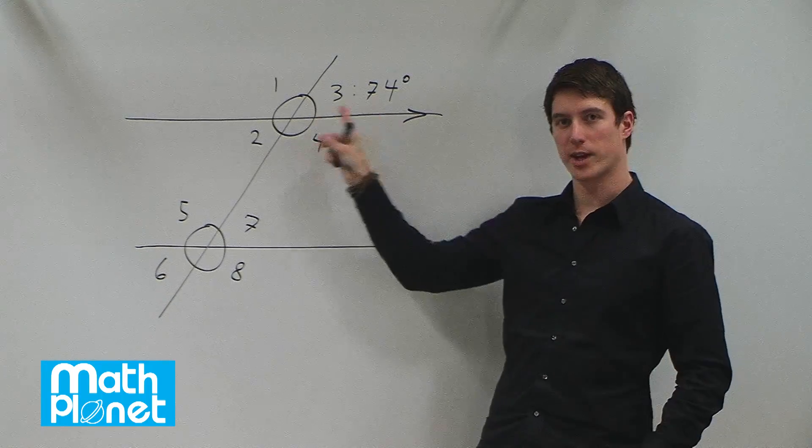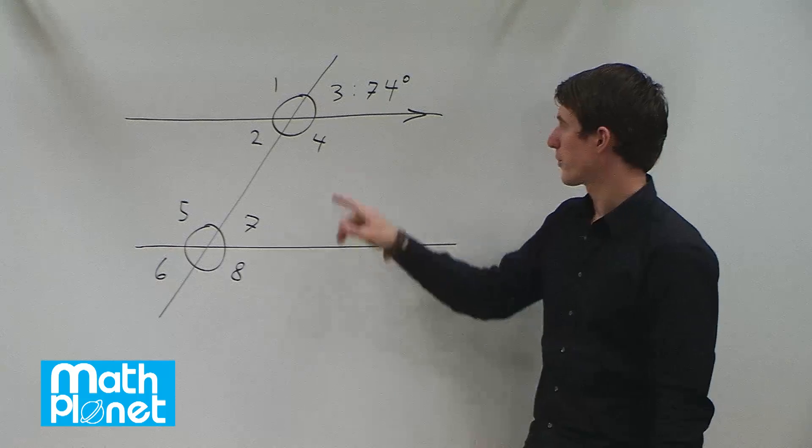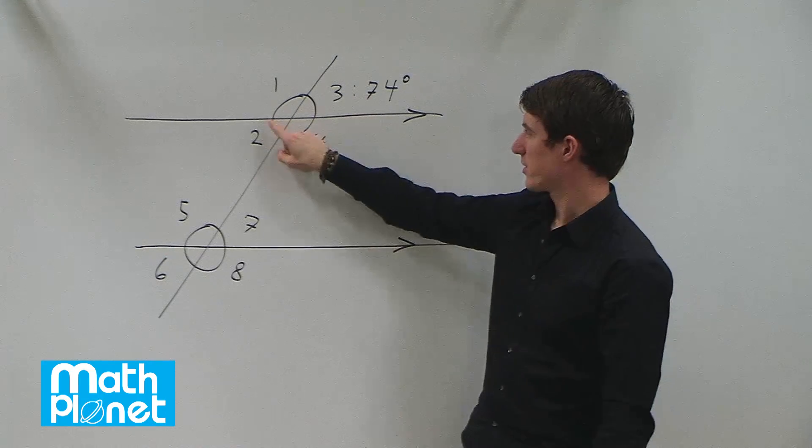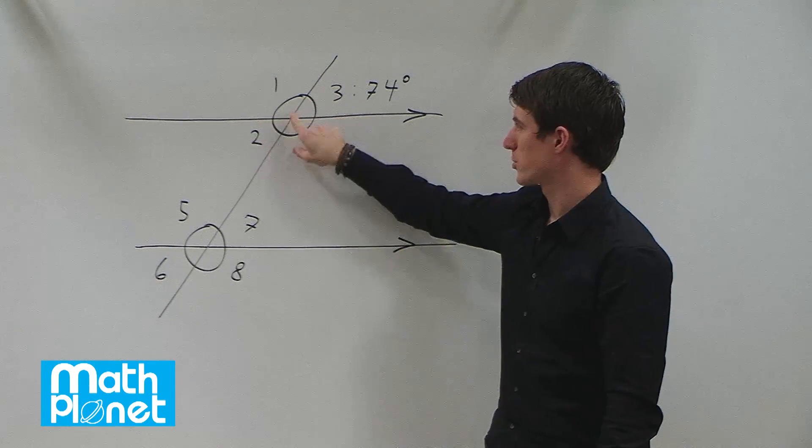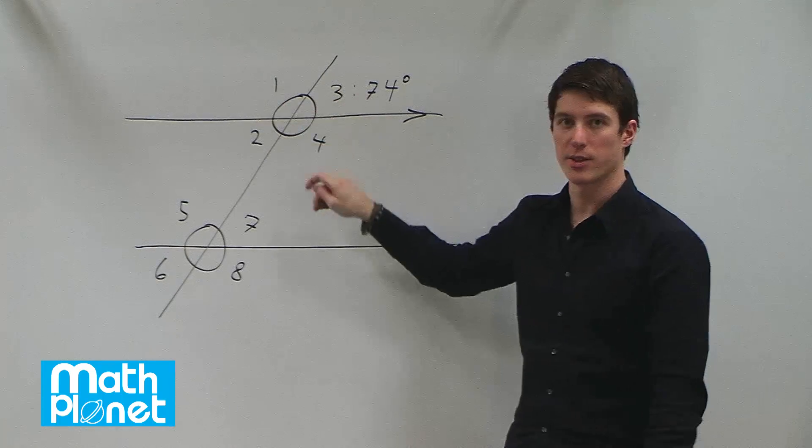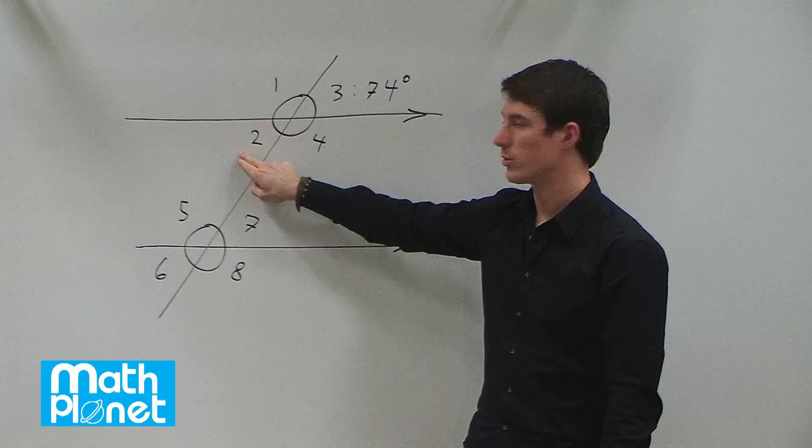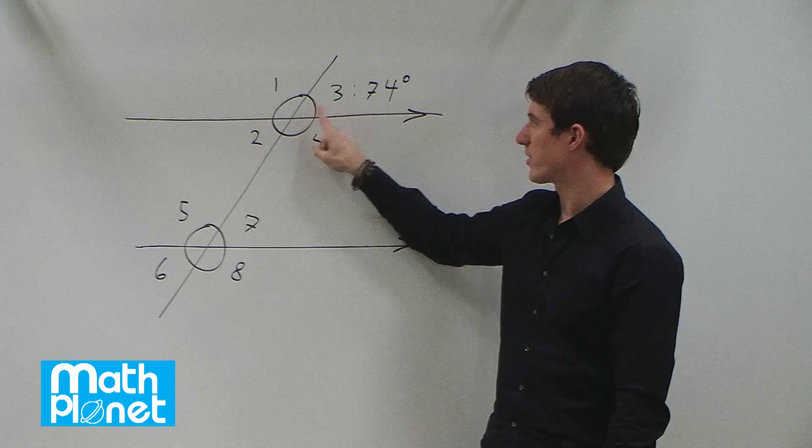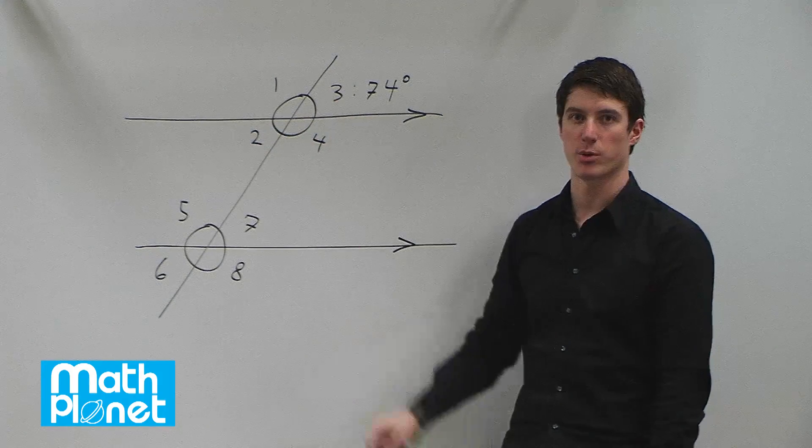From here we can determine what all these other angles are. The first thing we can do is see that since these are opposite each other and there's only one pair of straight lines that intersects, the opposite angle will be exactly the same. So angle 2 is the same as angle 3, so they're both 74 degrees.